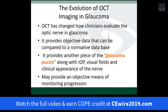OCT has really changed how we manage ocular disease, particularly on the retina side for diabetes and macular degeneration, but also on the glaucoma side. Spectral domain OCT has really changed how we evaluate the optic nerve in glaucoma. It provides us objective data that we can, when we're looking at a nerve, compare it to a normative database.